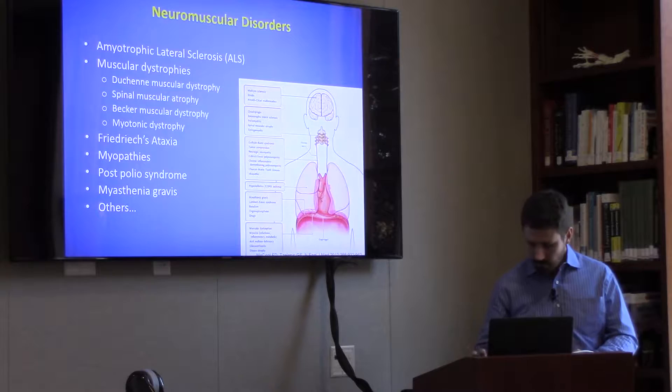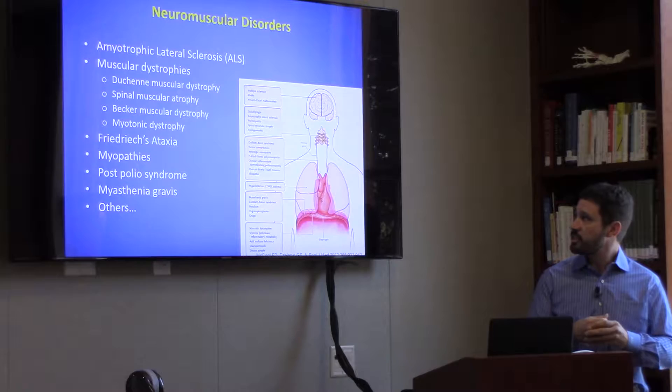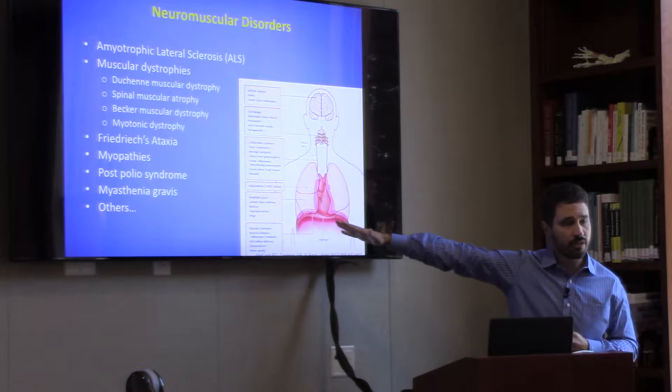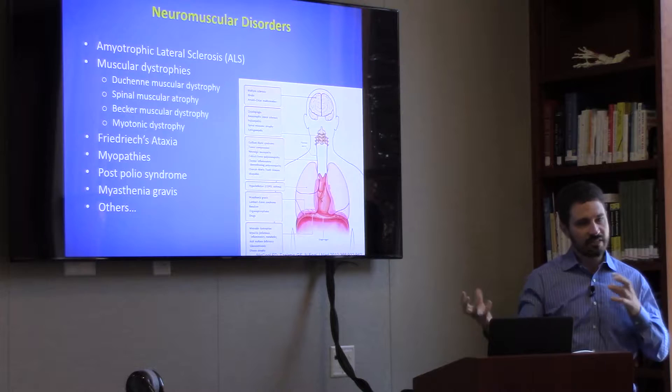From a lung and sleep doctor standpoint, we look at muscular or neuromuscular disorders as a big group of things — anywhere from up to the brain all the way down to the muscles that surround the lung — that can affect breathing. It's a very oversimplified approach, but that's kind of how we view it. There's a lot of different things that could affect the muscles of breathing in various parts of the body.